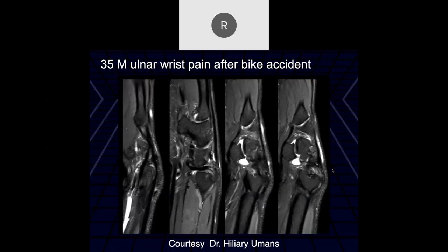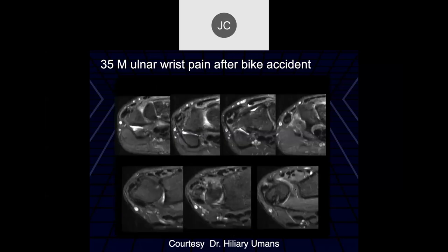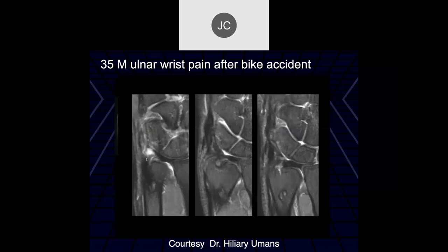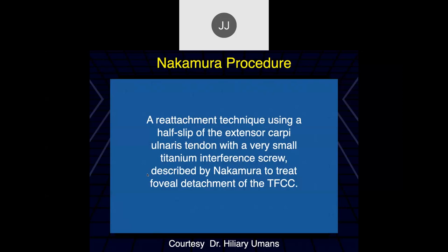35-year-old with ulnar wrist pain after a bike accident. I'm not quite sure what's coming across the distal ulna — is this post-surgical? Maybe the tendon's going through a tunnel, the ECU going through a tunnel? Yes, this is post-surgical — this is called a Nakamura procedure, a graft procedure to try to stabilize the distal radial ulnar joint in lieu of a TFCC.